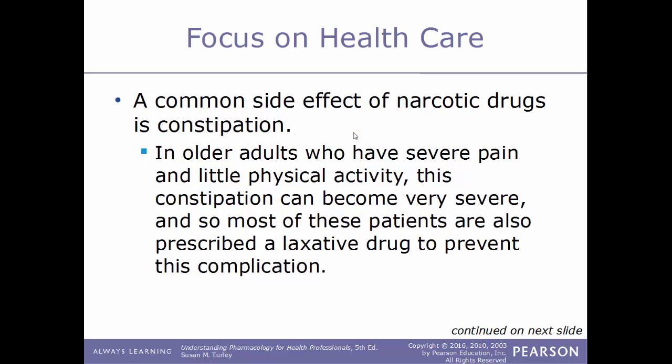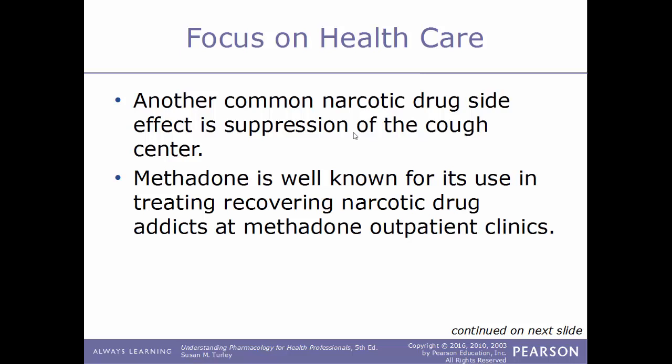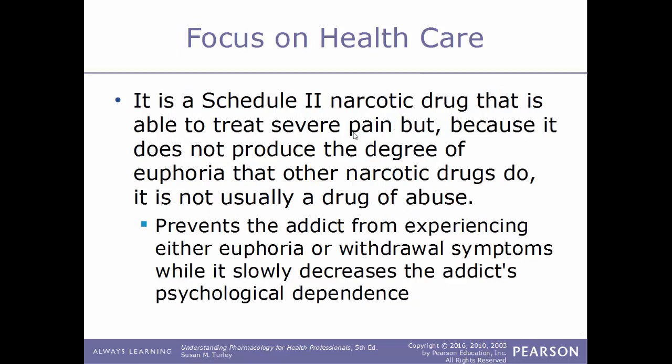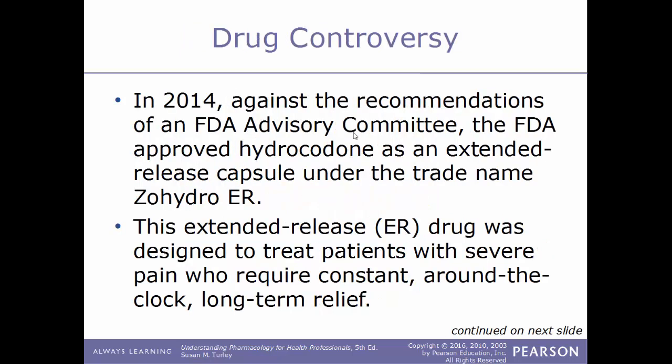A common side effect of narcotic drugs is constipation. In older adults who have severe pain and little physical activity, constipation can become very severe, so most such patients are also prescribed a laxative drug. Another common side effect is that narcotics suppress the cough center within the brain. Methadone is well known for its use in treating recovering narcotic drug addicts at methadone outpatient clinics. It is a Schedule 2 narcotic that treats severe pain, but because it does not produce the euphoria other narcotics do, it is not usually a drug of abuse. This prevents the addict from experiencing euphoria or withdrawal symptoms while slowly decreasing their psychological dependence.